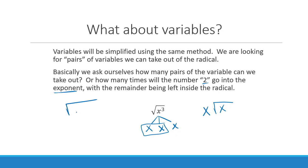For another example: the square root of x to the 7th. How many pairs can you take out of 7? 2 goes into 7 three times giving 6, but there's a remainder of 1 left over — so x cubed comes out and x to the 1st stays inside.